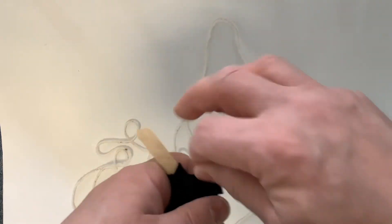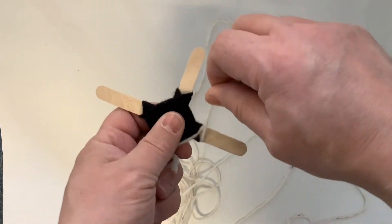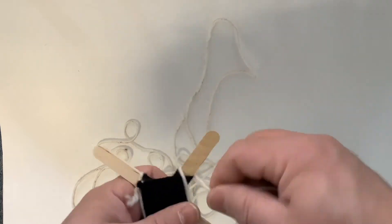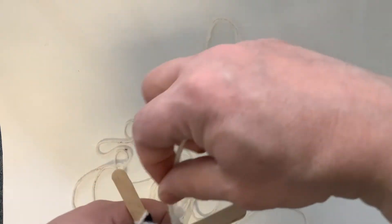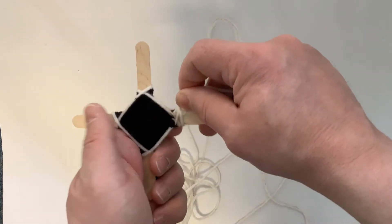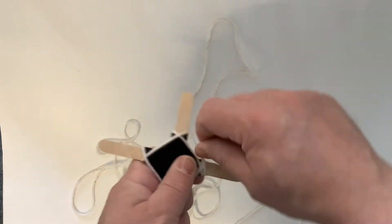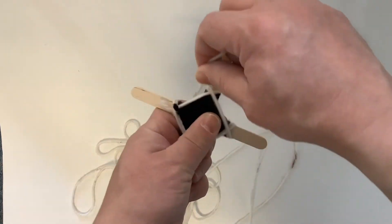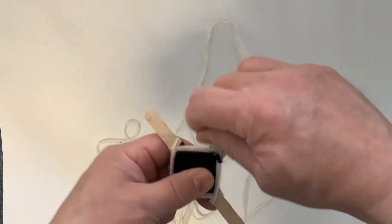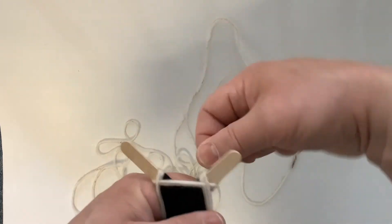And I just keep the same pattern, wrapping around. You can be a little more careful than I was putting the knot on the back of the weaving. You can see it sort of gets covered up by the yarn as you go along.